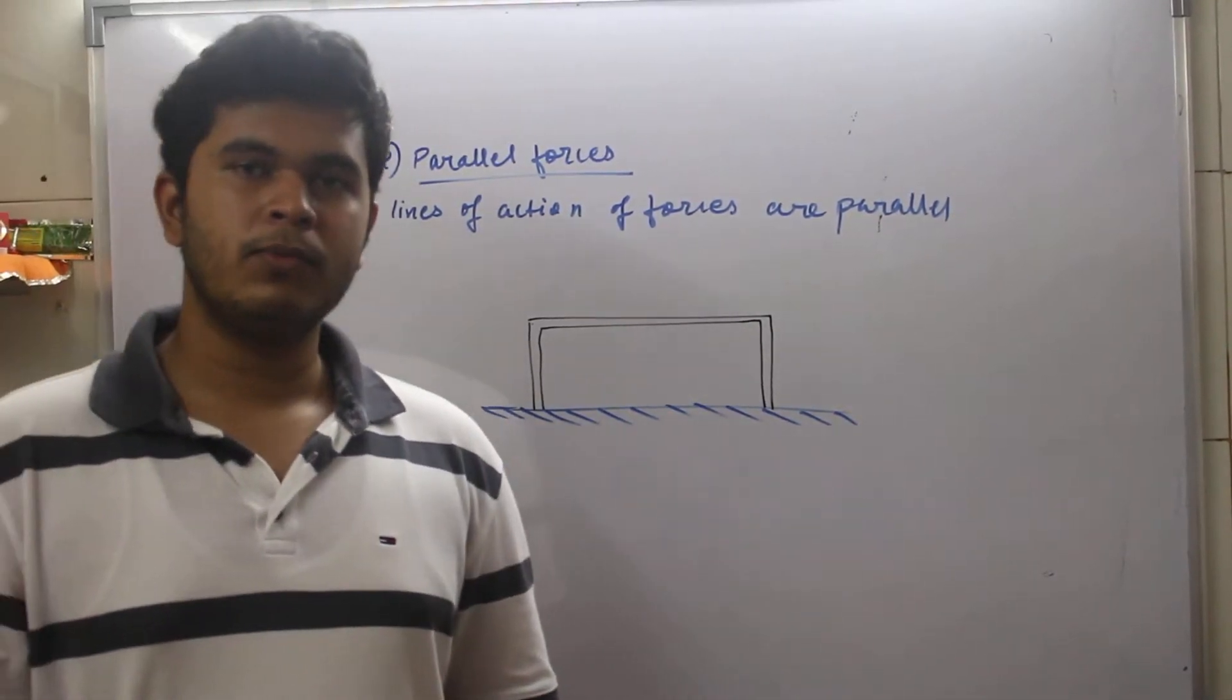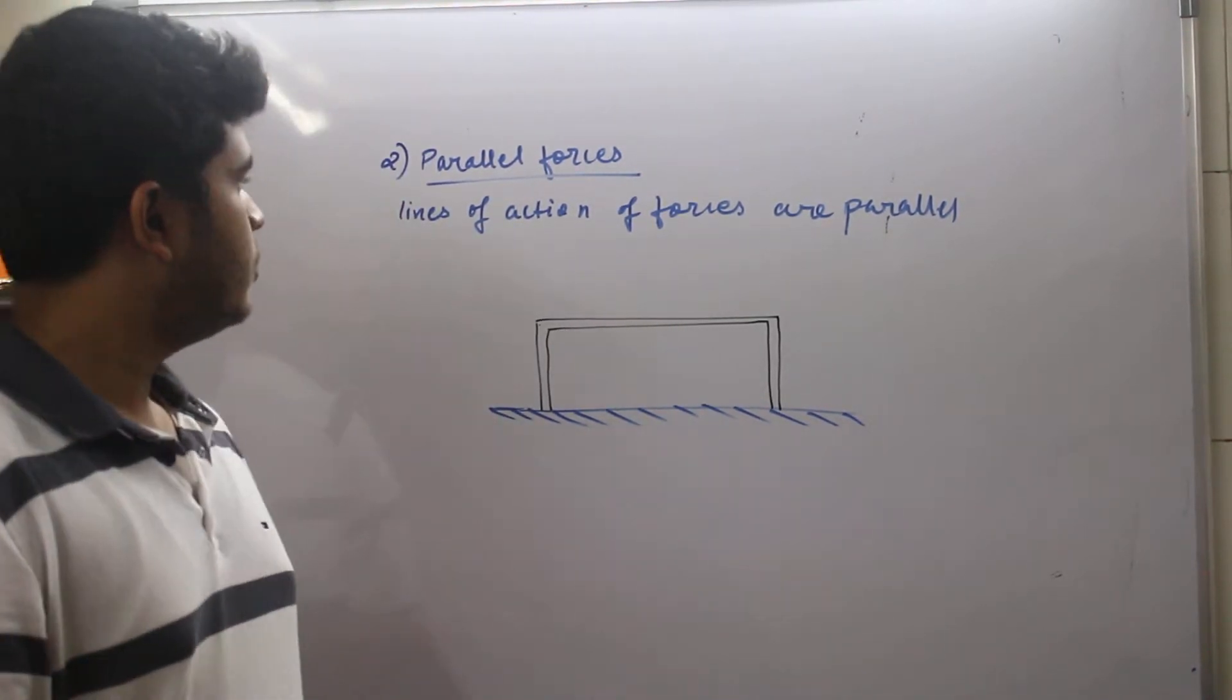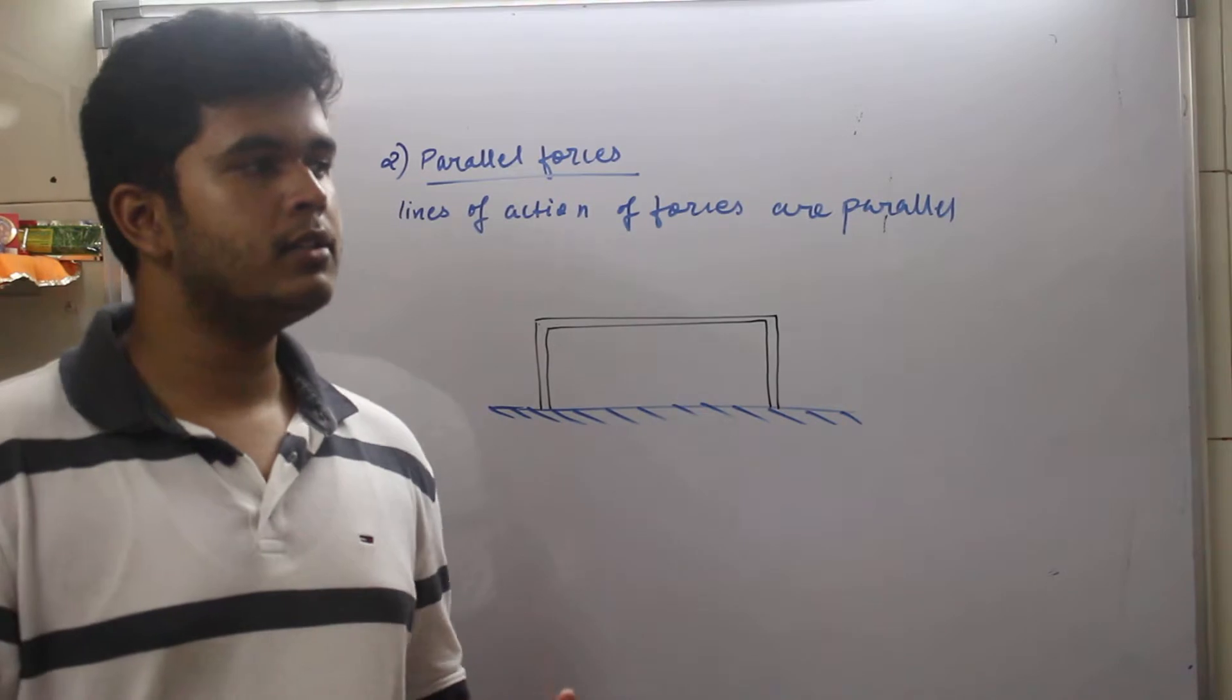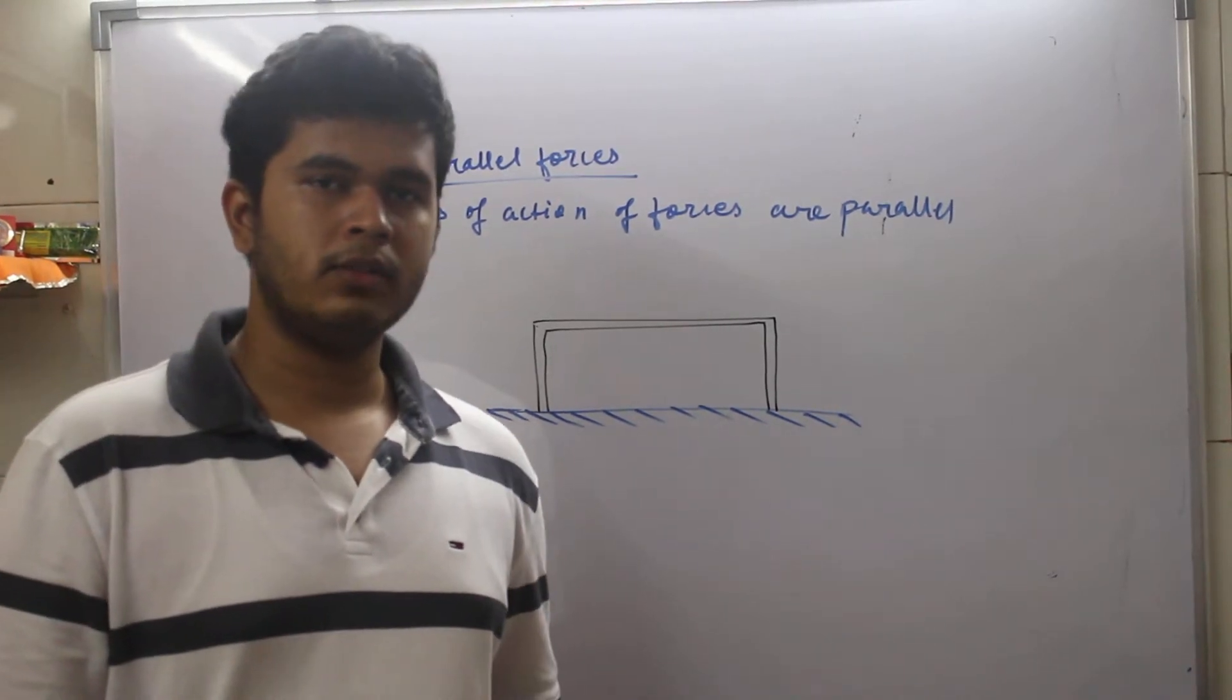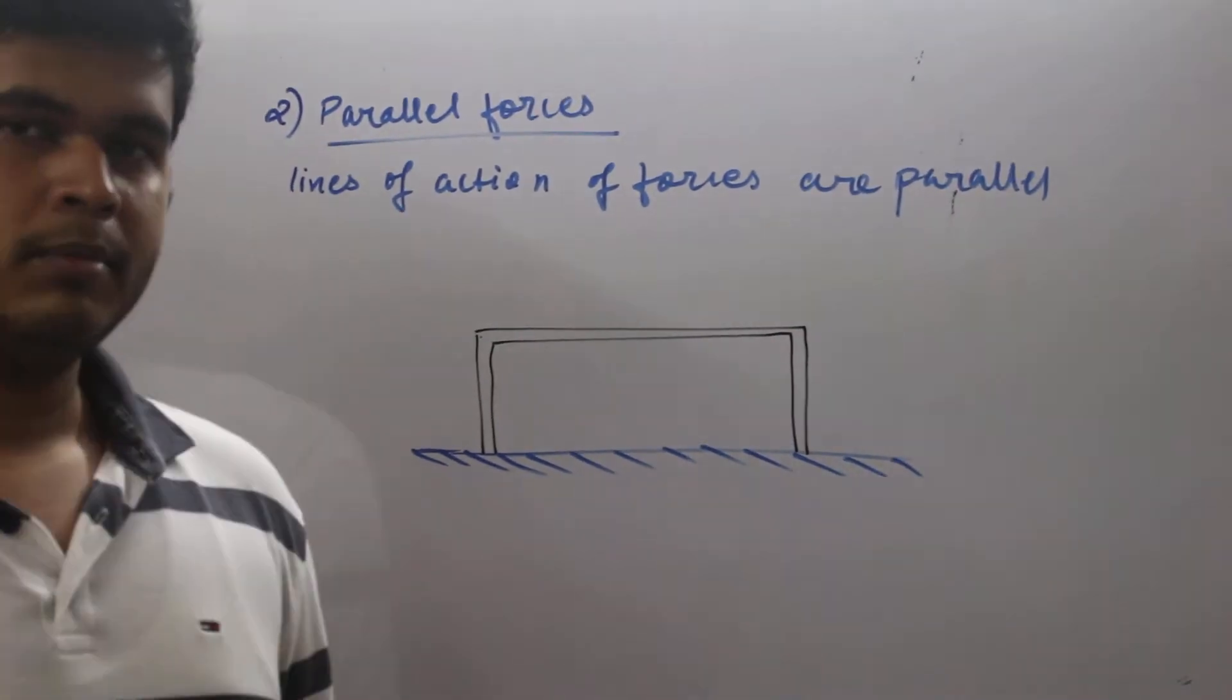Okay, the next system of forces in the coplanar category is parallel system of forces. In parallel system of forces, lines of action of forces are parallel to each other. Let's take an example.